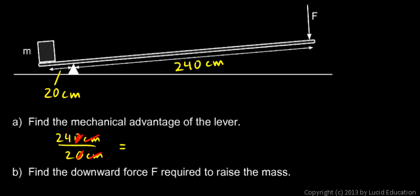We're left with 24 over 2, which is 12. This lever gives us a mechanical advantage of 12 because the input force is applied at a distance 12 times as large as the output force.